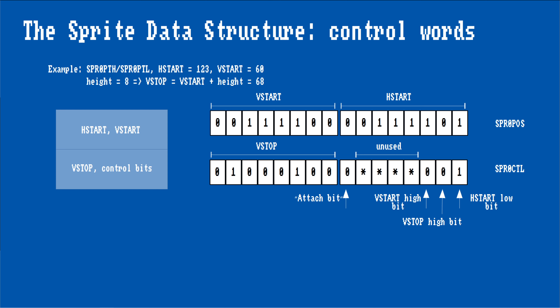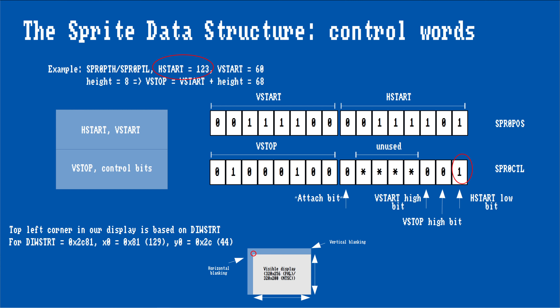Hstart and Vstart define the horizontal and vertical positions, while Vstop tells the system at what line to stop fetching data, which is Vstart plus the sprite's height. These values all have a size of 9 bits. But be aware that Hstart's low bit is in the second word, while it is the high bit for Vstop and Vstart. Otherwise, you might wonder why your sprite moves in steps of two pixels horizontally, as it happened to me once. When setting our sprite positions, we should be aware of the value of diwstart, as it defines the top left corner of our display.